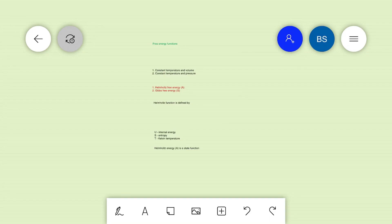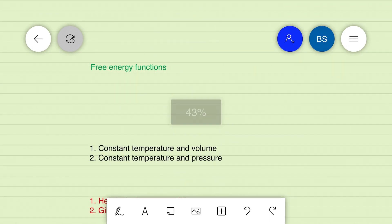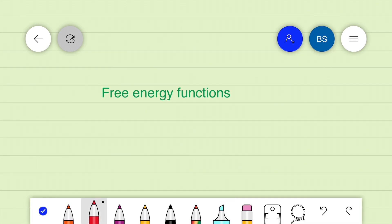Hey everyone, today we will discuss free energy functions. In our previous session we saw that for a spontaneous process, delta S universe should be greater than zero—that is, the change in entropy for the universe should be greater than zero. While this is a useful criterion for determining whether or not a process is spontaneous, it is difficult.